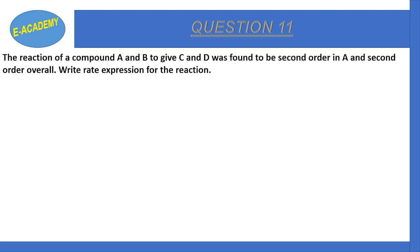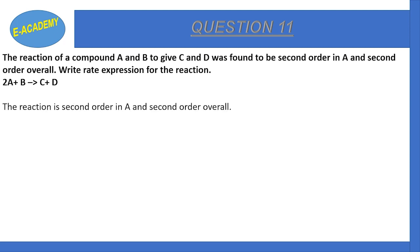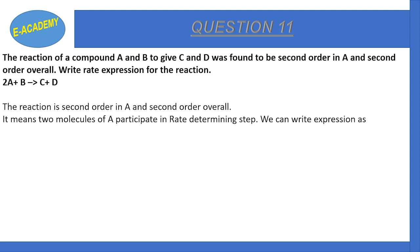The rate expression for the given reaction is 2A + B → C + D. Second order with respect to A means two molecules of A participate in the rate-determining step. Therefore, the rate expression is: Rate = k[A]², where k is the rate constant.